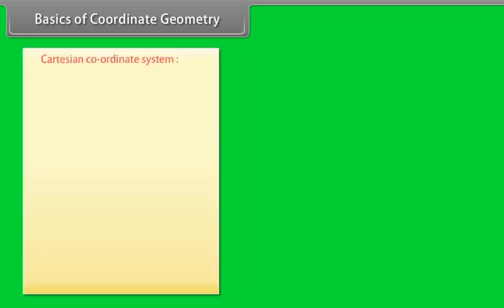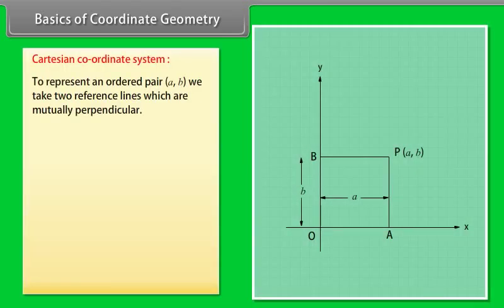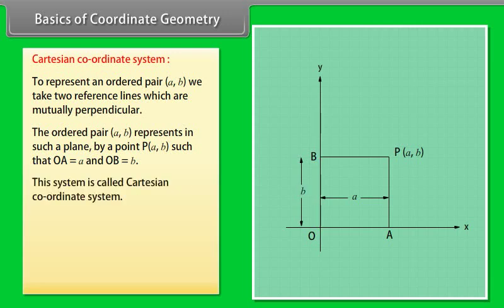Basics of coordinate geometry — Cartesian coordinate system. To represent an ordered pair (A, B), we take two reference lines which are mutually perpendicular. The ordered pair (A, B) represents in such a plane a point P(A, B) such that OA is equal to A and OB is equal to B. This system is called the Cartesian coordinate system.